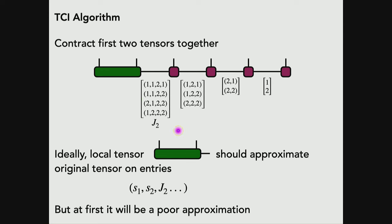How do you do machine learning? You go backwards and contract the first two tensors together. Those column pivot sets are covered up — we're going to throw them out and find better ones. This local tensor, with two of the original indices and the bond index, should approximate the original tensor on all entries — every setting of S1 and S2 and any of the J values. But at first it'll be a poor approximation, because many entries in the covered purple tensor were just interpolating numbers from a bad initial choice. Those interpolations were very crude and the entries may be very far from the real function values.